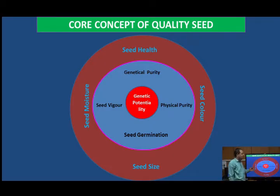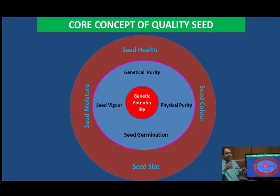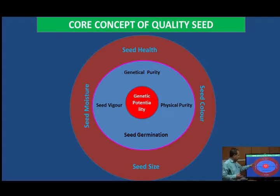Seed vigor is one more component of seed quality. Seed vigor is the sum total of all those properties which determine the planting value — after planting the seeds, it develops uniform and fast growth of the seedlings under different stress environments, both favorable and stress environments. Seeds must have proper vigor. We complete the middle core with its components: genetic purity, physical purity, seed germination, and seed vigor.